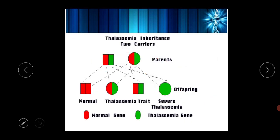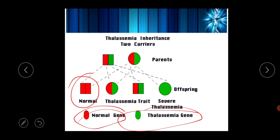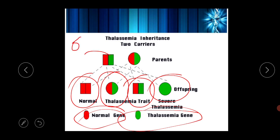This shows a cross of alpha and beta thalassemia. The normal gene and the thalassemia gene are shown. When two carrier parents are crossed, we get 25% normal offspring, 25% carrier female, 25% carrier male, and 25% thalassemic female. According to pedigree analysis, the circle symbol represents female and the square symbol represents male.